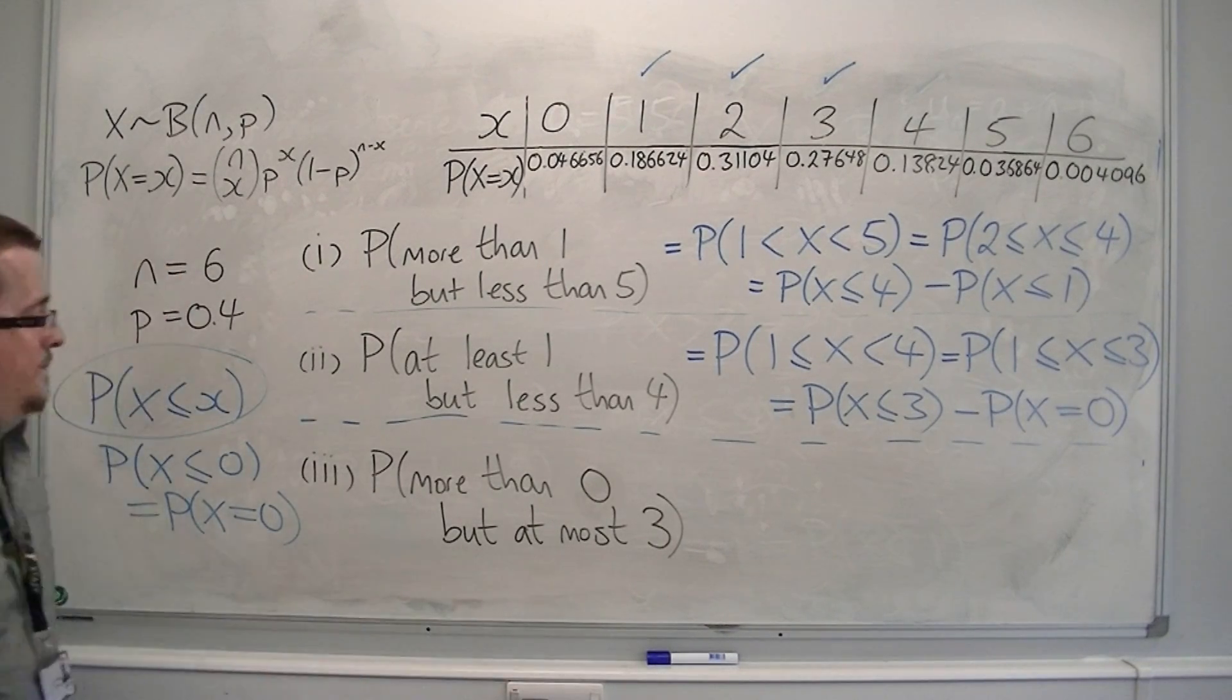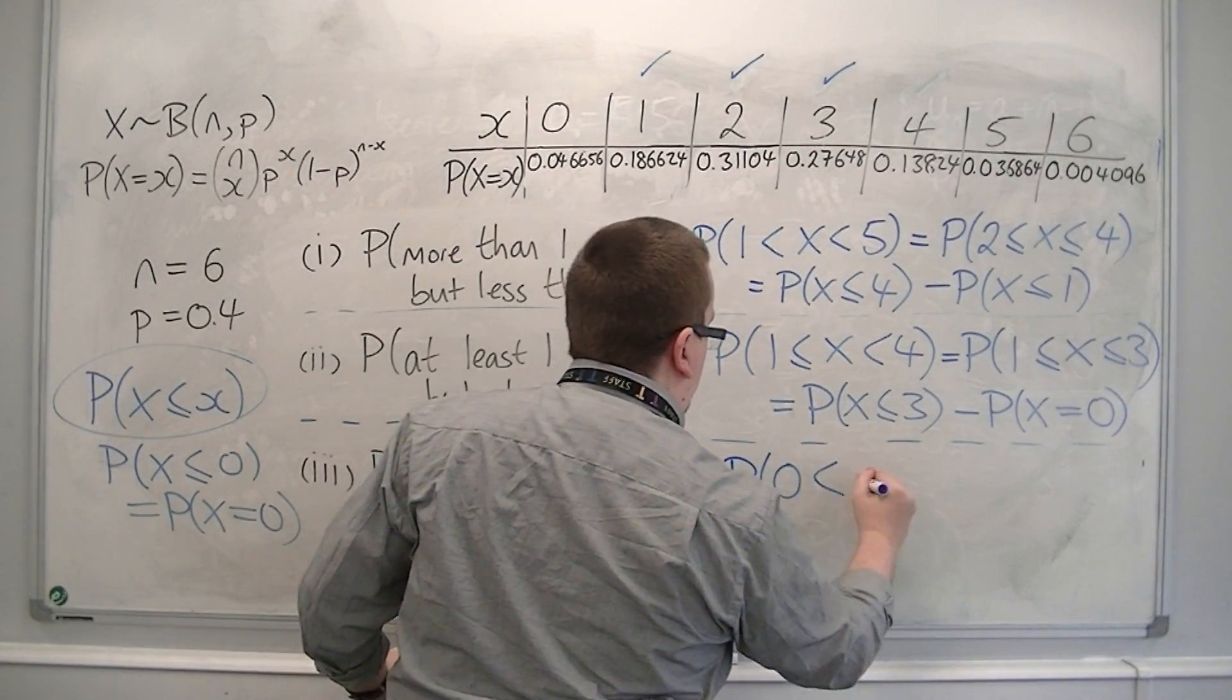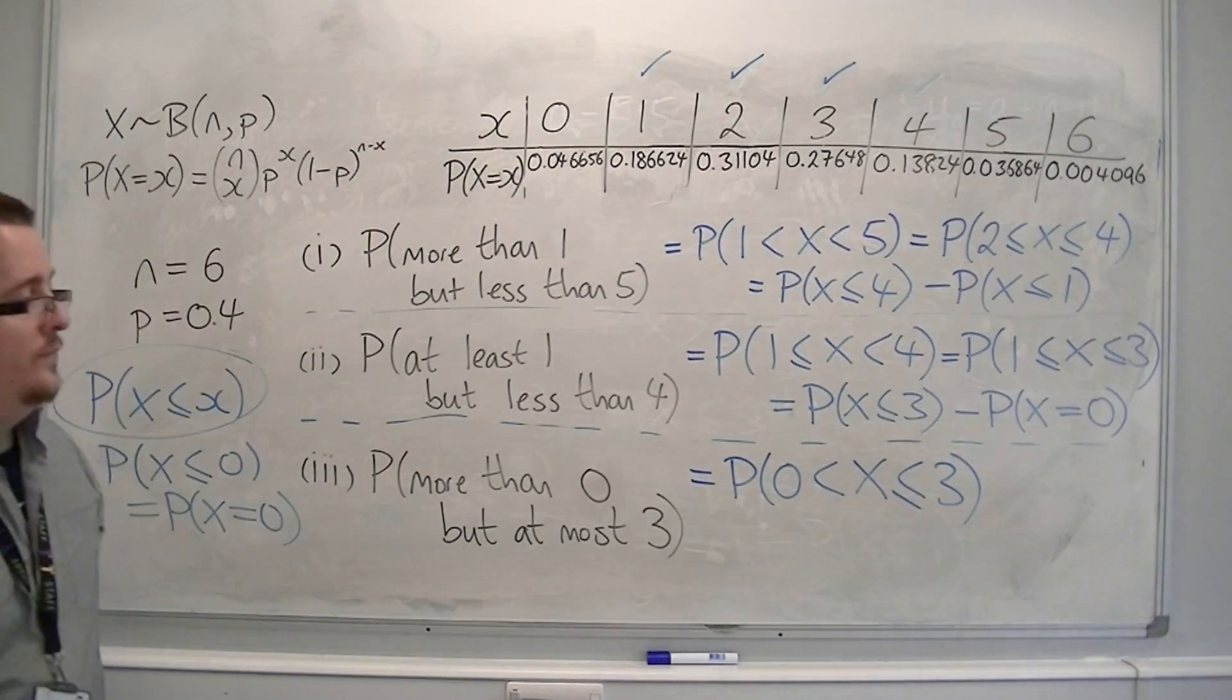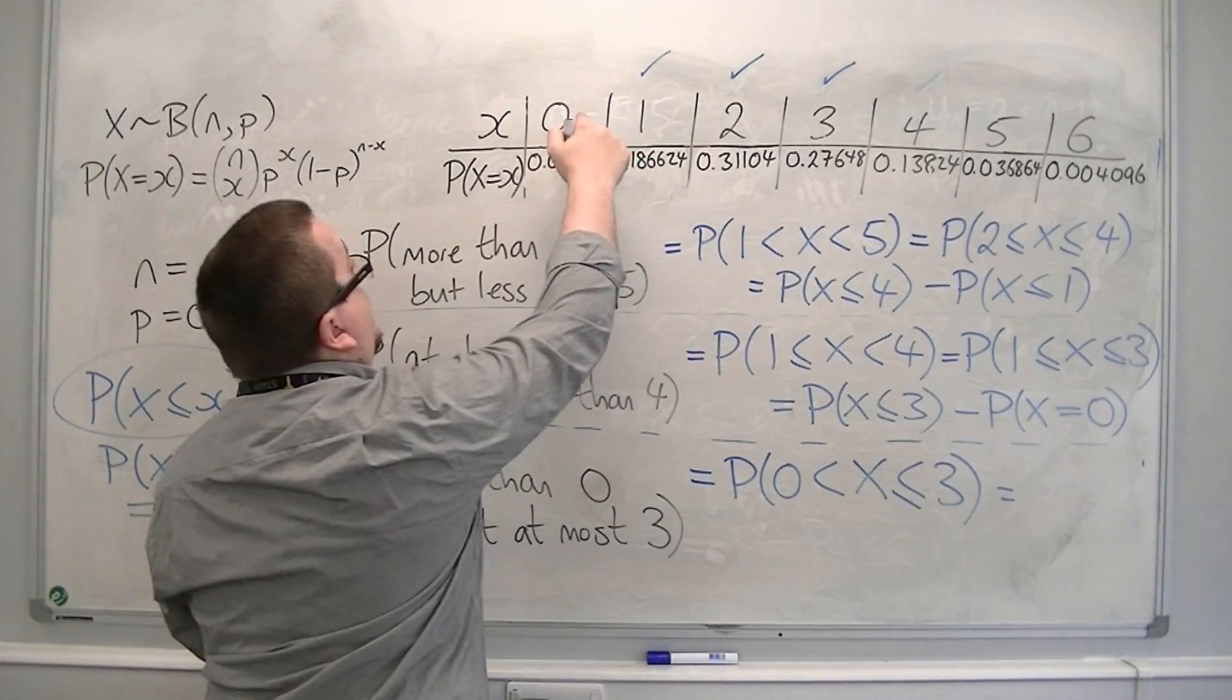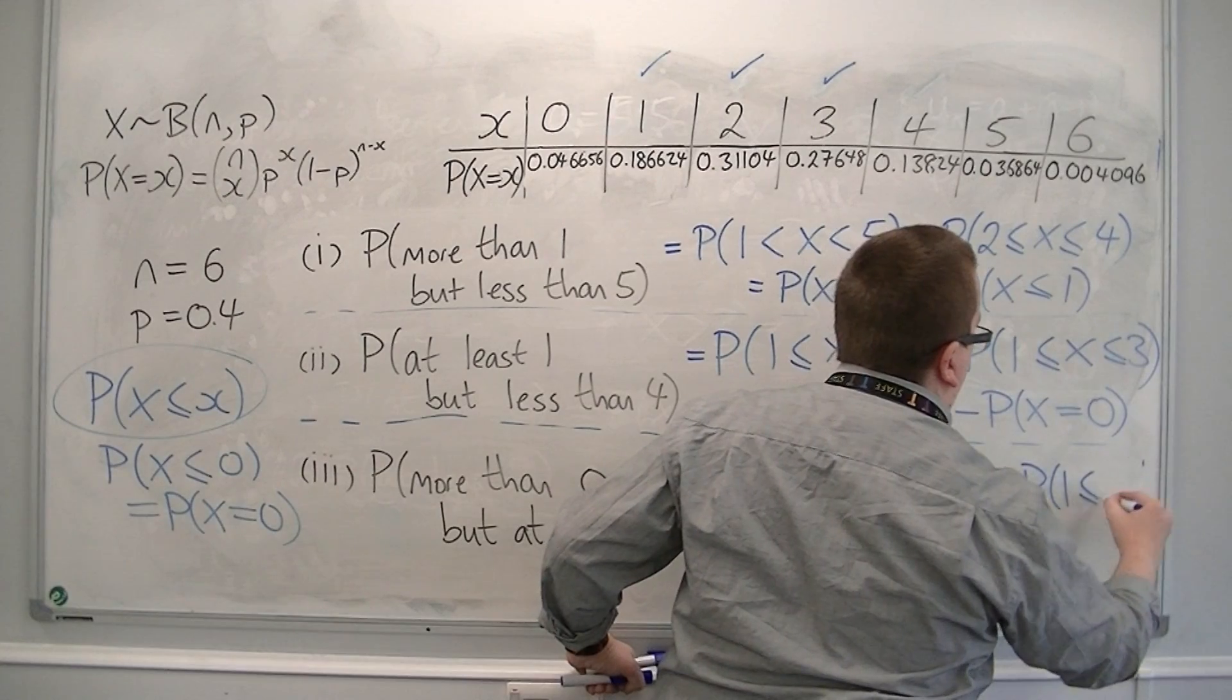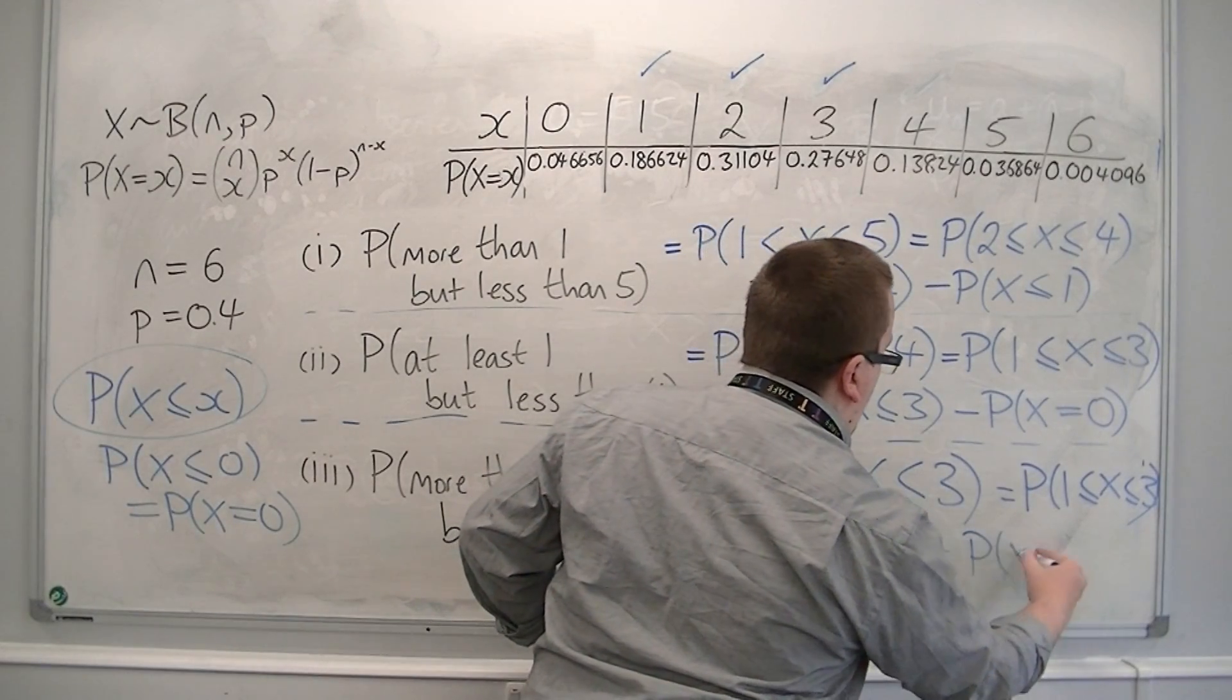So number three, the probability of getting more than zero but at most three. So I want to be more than zero but at most three, so that includes three. So this one is at more than zero but at most three, and so it's exactly the same probability that I had before in the previous example. So the probability of x being less than or equal to three, take away the probability of x being zero.